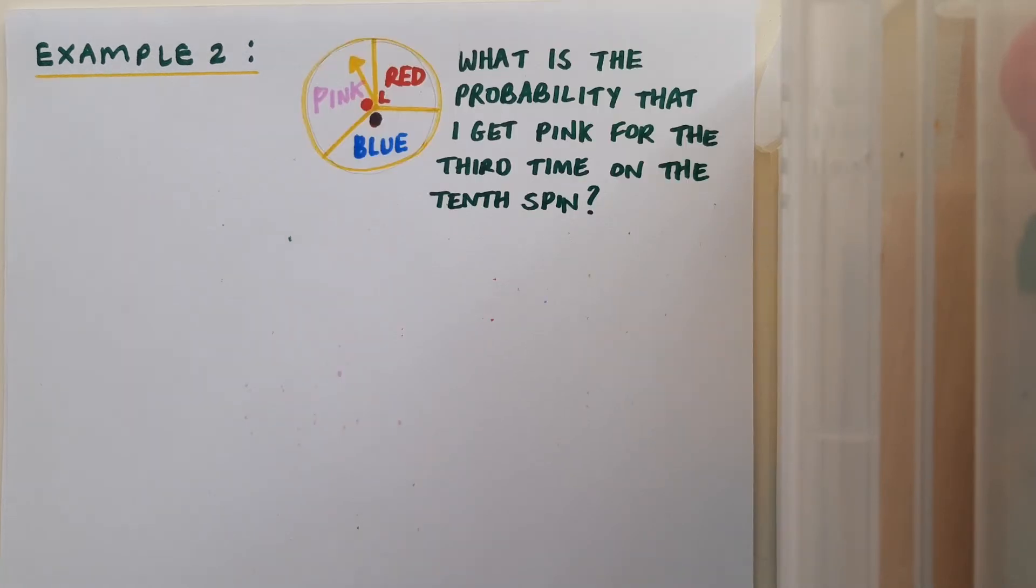Let's have a look at a second example. So in this example, I have a spinner. And when it spins, it can land on red, pink, or blue. And we can see here in the diagram that red is marked with a 90 degree angle, and pink and blue have angles of equal size since they're both marked with a dot. I want to find the probability that I get pink for the third time on the tenth spin.